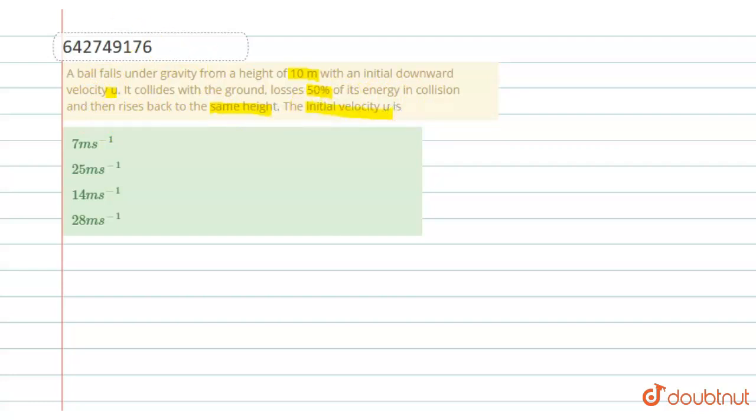We have to find the initial velocity. First of all, let's assume the mass of the ball. Let mass of ball equal m and height equal 10 meters.